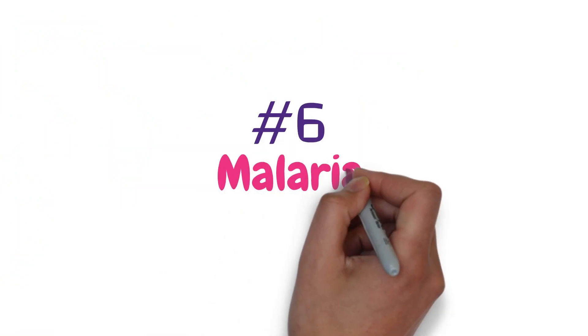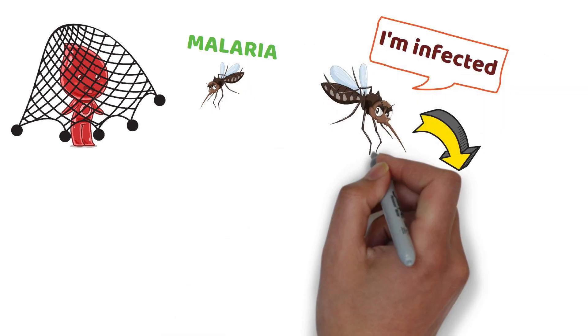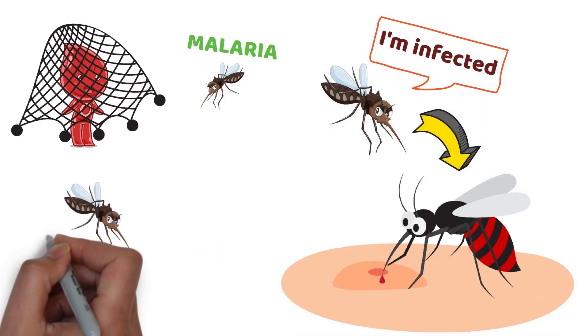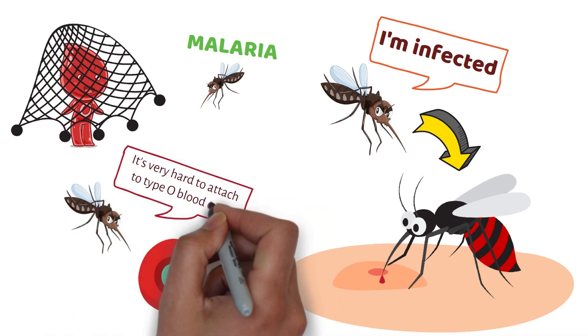Number six, malaria. Type O blood may help ward off this disease. You can get malaria when an infected mosquito bites you. The parasite that causes it has a harder time attaching itself to type O blood cells.